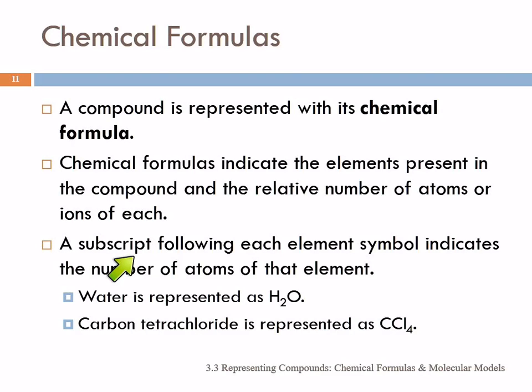We use a subscript after each element symbol to tell how many atoms of that element. For water, we have H2O—two hydrogen atoms and one oxygen atom. For carbon tetrachloride, the formula is CCl4, so one carbon and four chlorines.